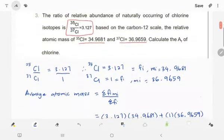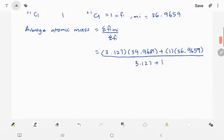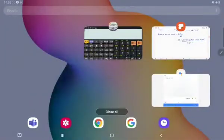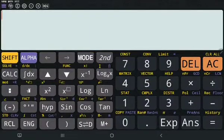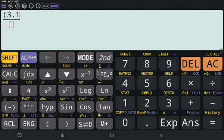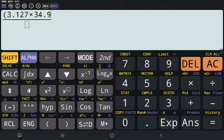So let's calculate. So 3.127 times with 34.9681 plus 36.9659.